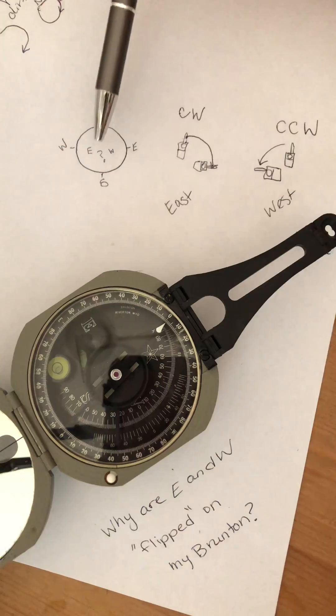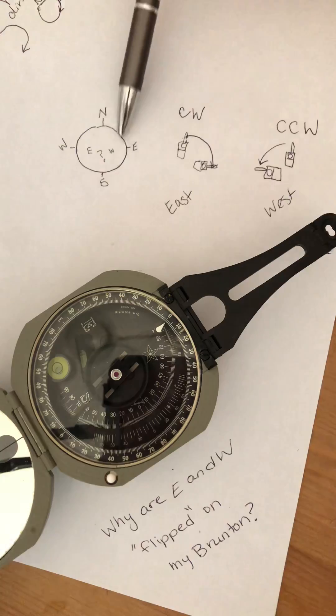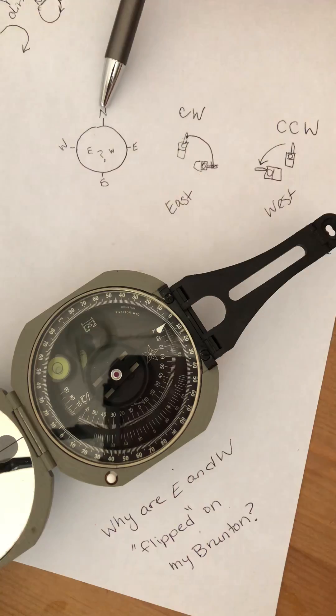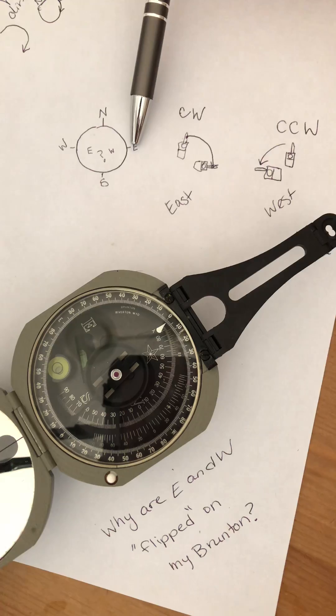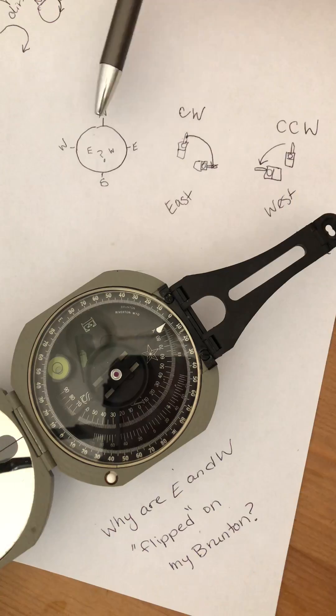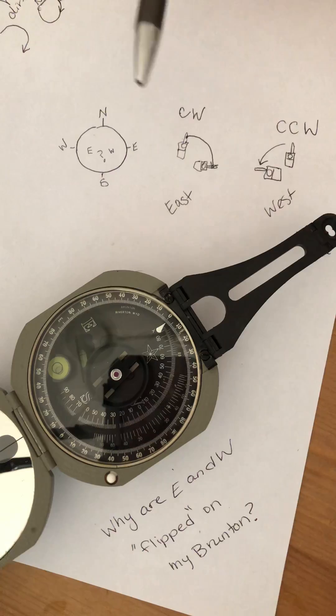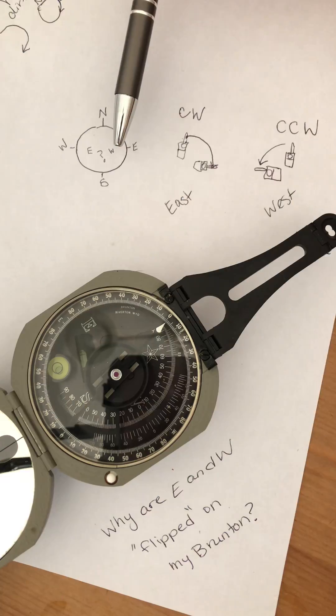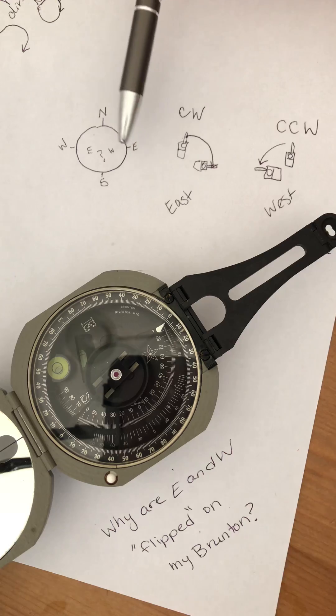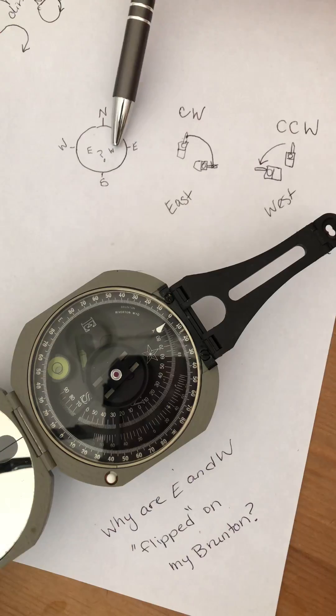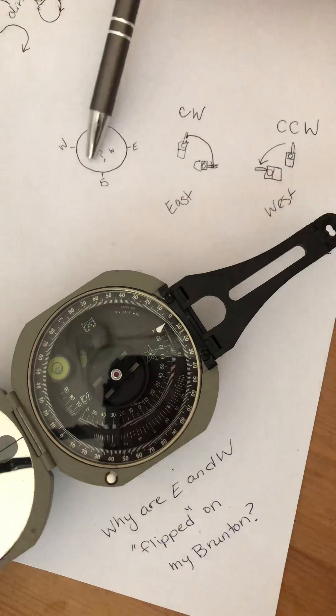What I mean by that is they think about the setup of a stereo net where north is on top and east is clockwise from north, west is counterclockwise from north, and then they look at the center of their Brunton and east is on the left and west is on the right. So why is this flipped?